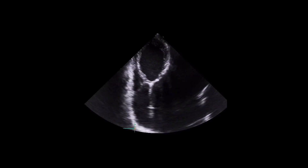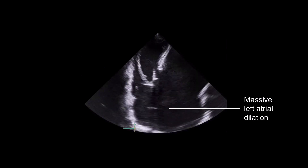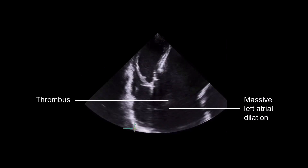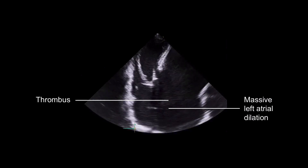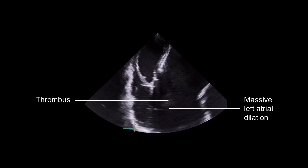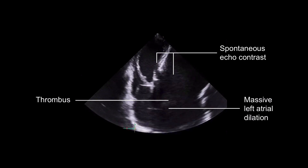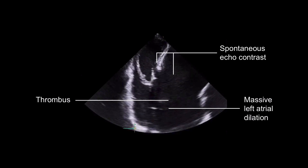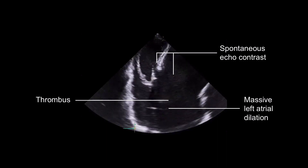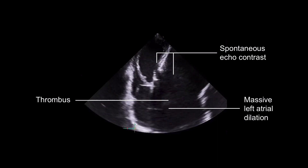This often occurs within the left atrial appendage, but thrombi can also form on the chamber wall or atrial septum. Spontaneous echocontrast appearing like smoke in the left atrium is seen when there is stasis of blood.